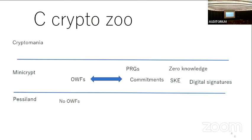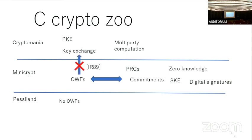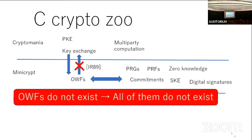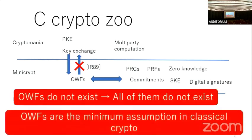We also have another world, Cryptomania, where more advanced functionalities are possible, like public key encryption, key exchange, multi-party computation, and so on. There is a barrier between these two worlds. We believe we will not be able to construct Cryptomania primitives from one-way functions in a black-box way. On the other hand, Cryptomania primitives imply one-way functions. So if one-way functions do not exist, all of them do not exist. This makes one-way functions the minimum assumption in classical cryptography.